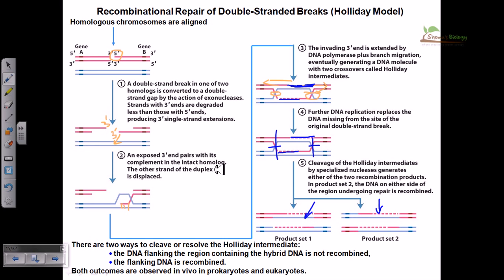That's how a double-stranded break can be repaired with the help of recombinational repair. Bacterial cells usually apply this recombination system — homologous recombination — to repair their DNA strands; that's the most important application of this recombination system in bacterial cells. In eukaryotic systems too, this recombination helps in shuffling, generating variations during crossing over, and also assists in the DNA segregation process.